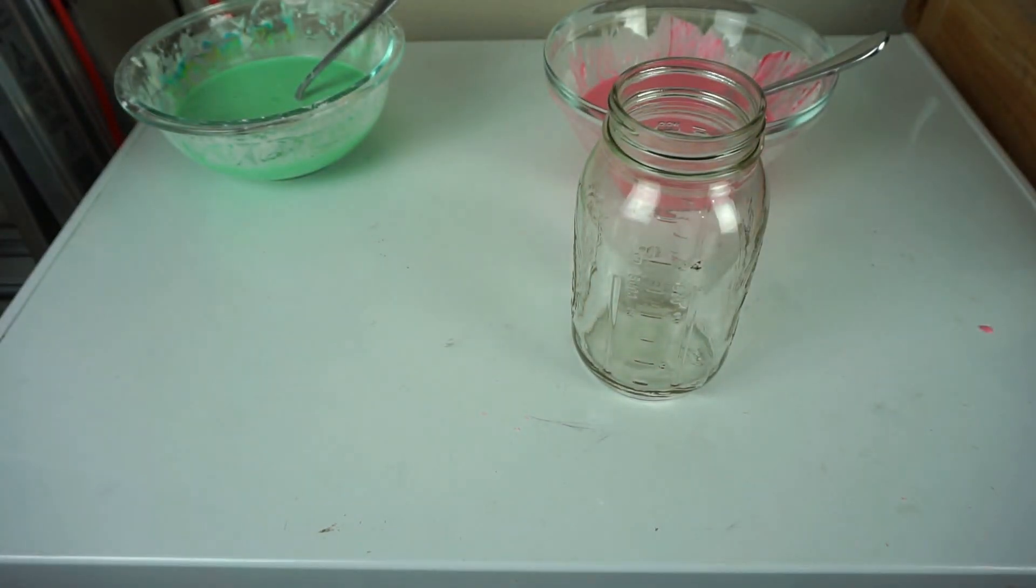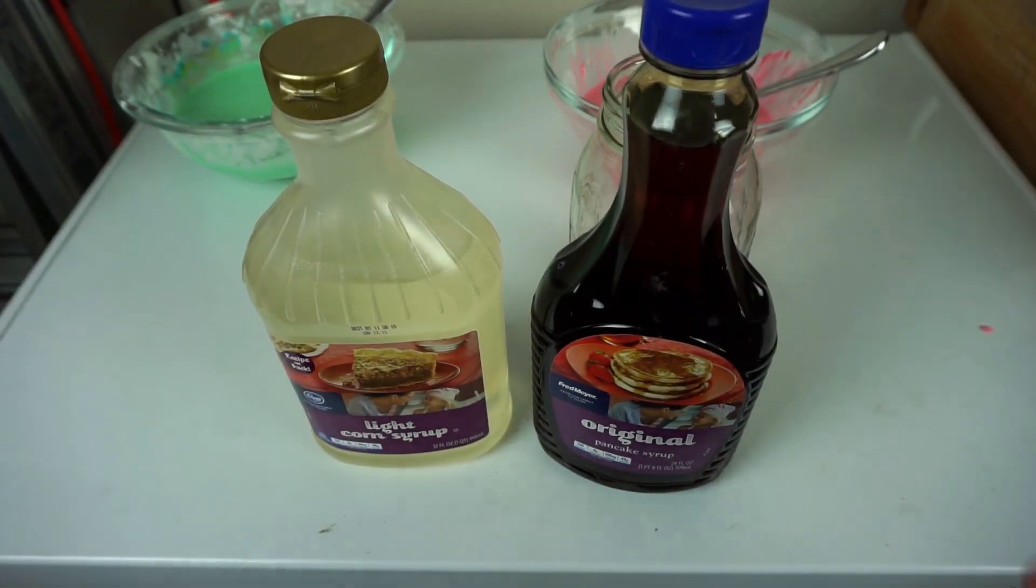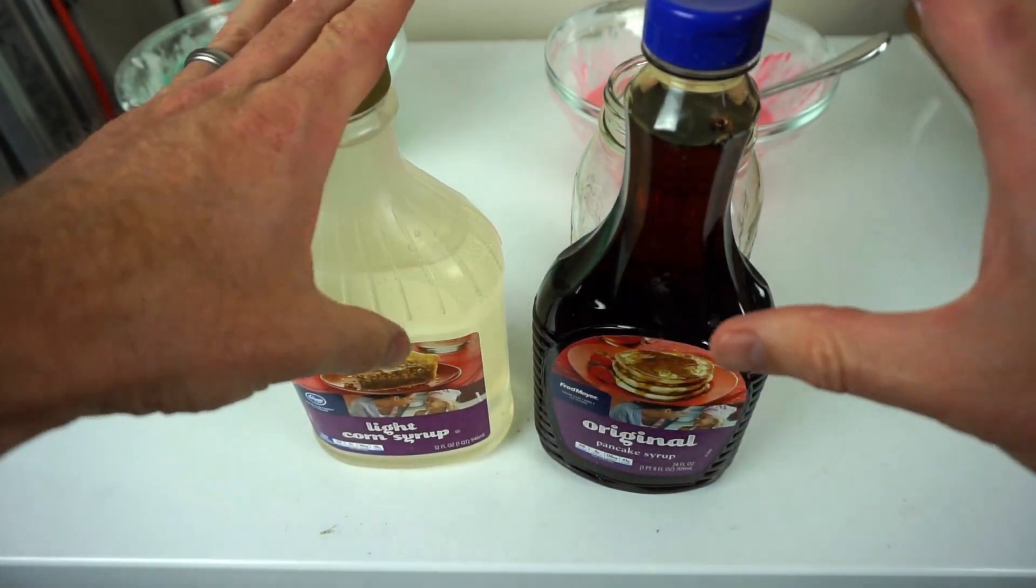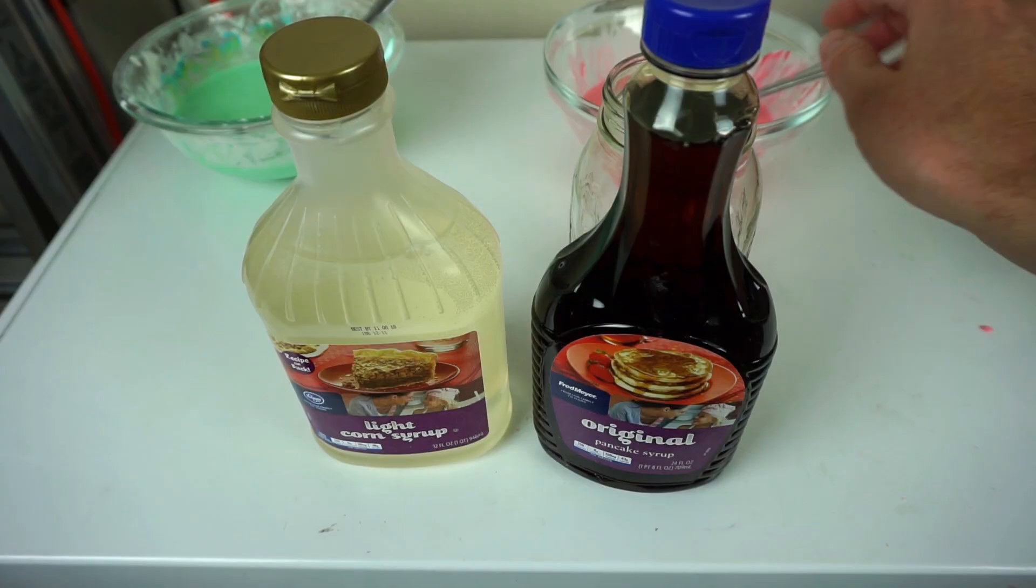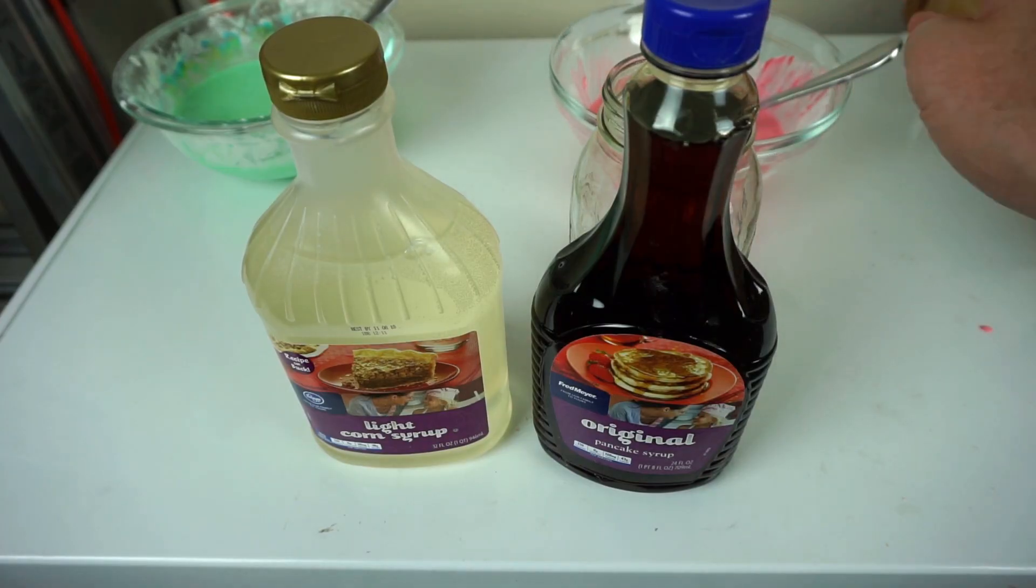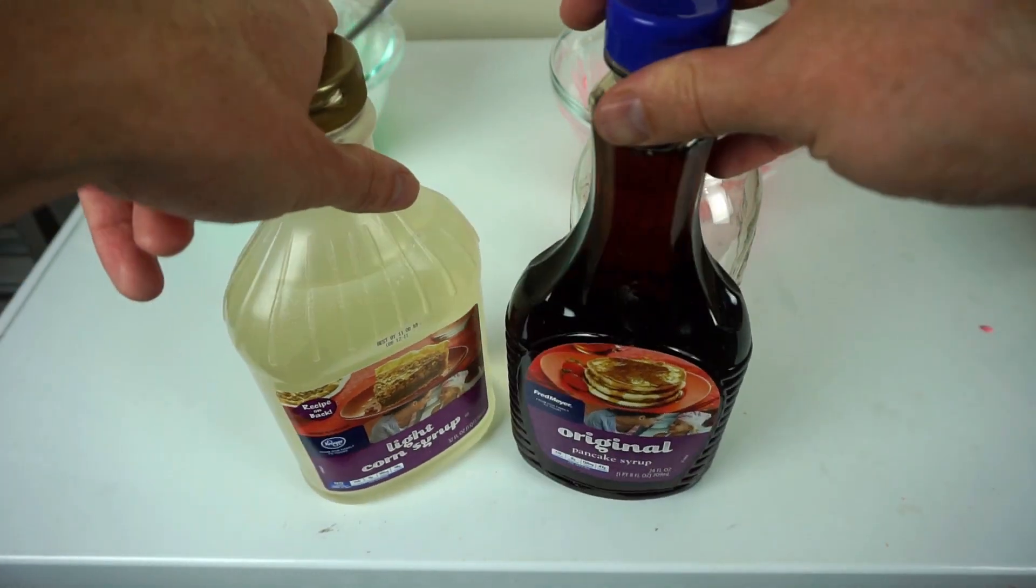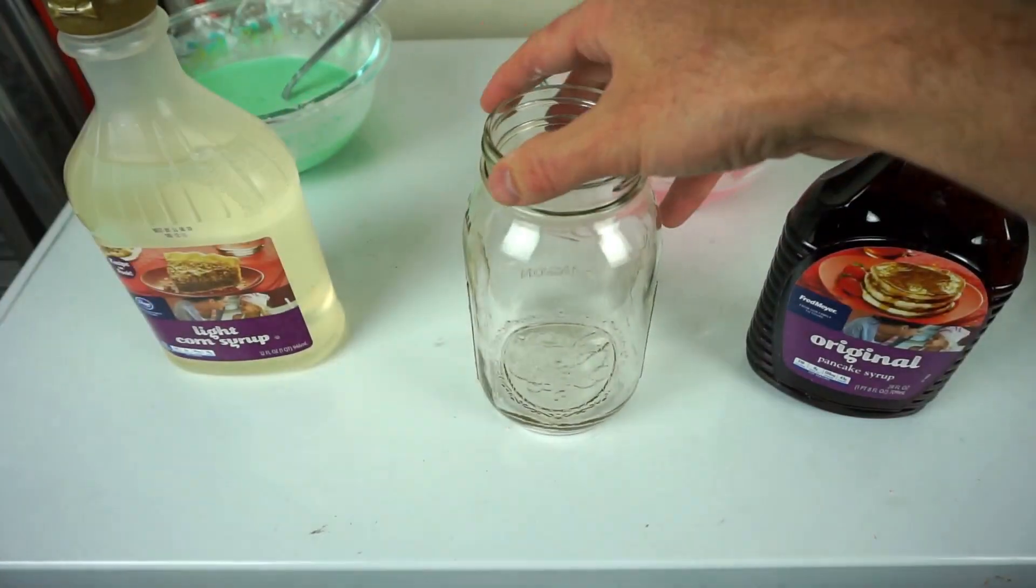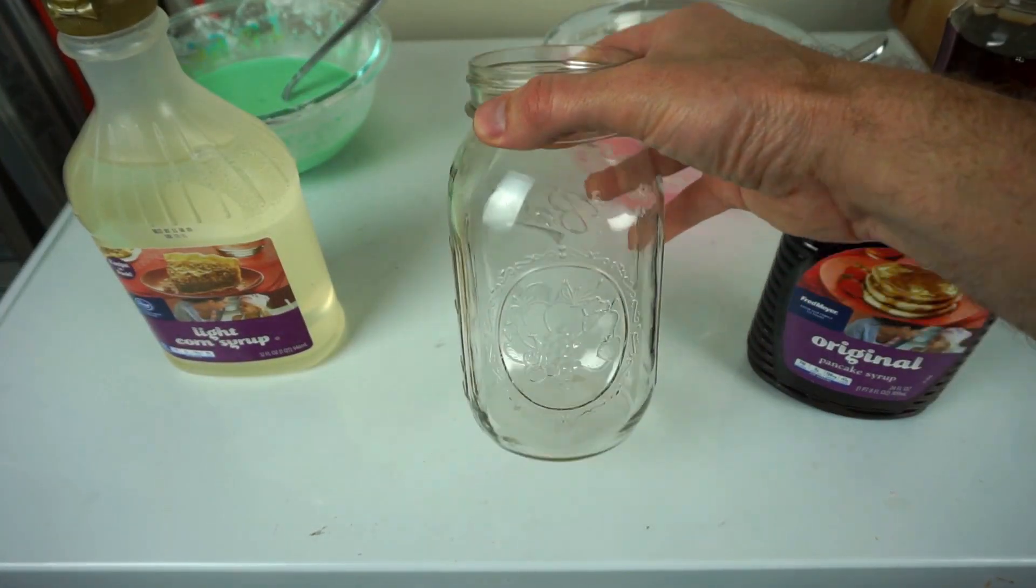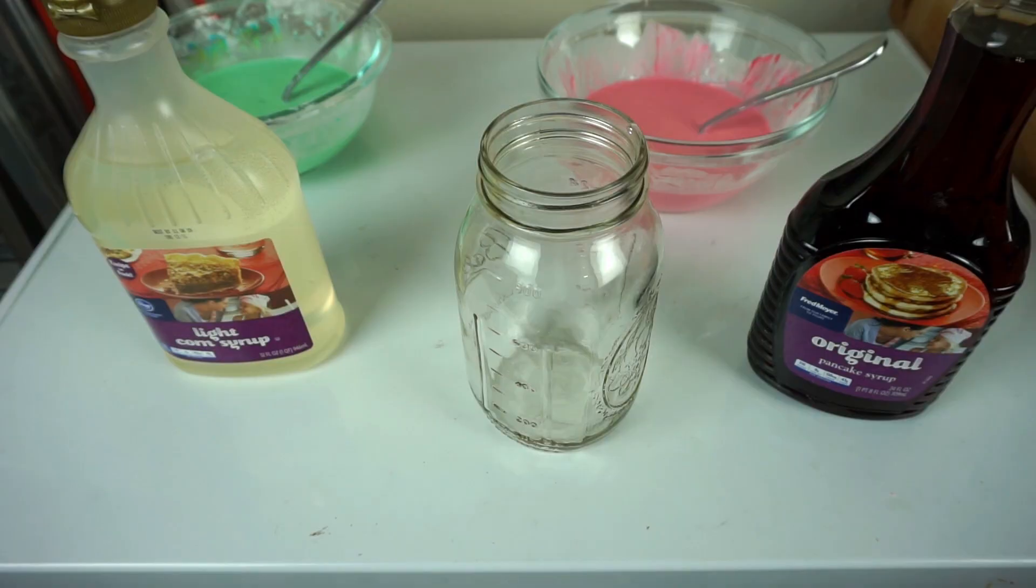So for comparison, before we try to mix the Oobleck in the paint shaker, I'm going to try to mix two different kinds of syrup together. Because the syrup has similar viscosity to the Oobleck when it's not under high shear rate, so let's see what a Newtonian fluid looks like. I'm going to be mixing it in a large mason jar so you can actually see the mixing happening.